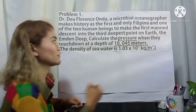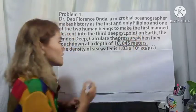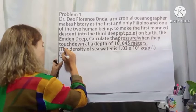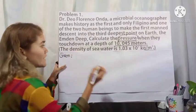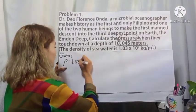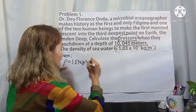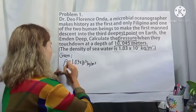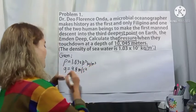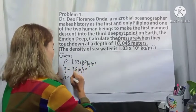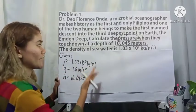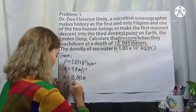In this problem, we are trying to find the pressure. Let us write down all the given information. The density of the fluid, which is seawater, is 1.03 × 10³ kg/m³. Gravity is equal to 9.8 m/s². The height or depth is 10,045 meters. And what we are trying to find is pressure.